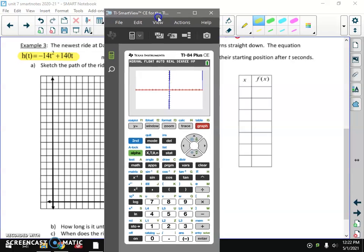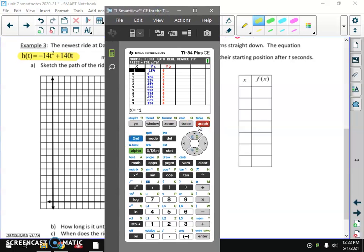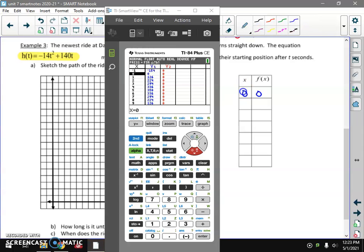Remember, this is real life, so when we do our second graph, we're going to start at zero. We're going to have to add a couple rows to our table this time. 0-0, 1-126, 2-224. Man, two seconds after the ride starts, I'm 224 feet in the air. Three is 294. Four is 336. Five is 350. Oh my gosh, I would never do this ride.